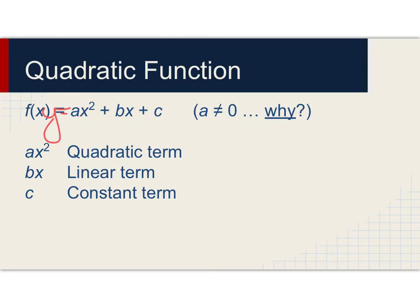We don't let a be zero for the simple reason that if a were zero, the ax² term would go away and we'd be left with just bx + c, which is slope-intercept form of a line. The ax² term is called the quadratic term, bx is the linear term, and c is the constant term.